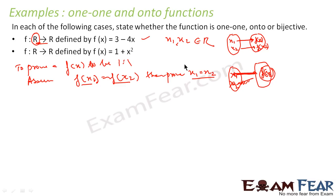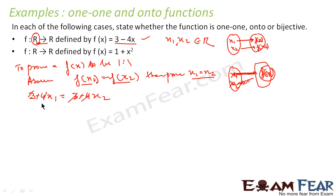For f(x) = 3 − 4x, f(x1) = 3 − 4x1 and f(x2) = 3 − 4x2. We assume f(x1) = f(x2), so 3 − 4x1 = 3 − 4x2. The 3s cancel, the negatives cancel, and dividing by 4 gives x1 = x2. Thus we can say that it is a one-to-one function.